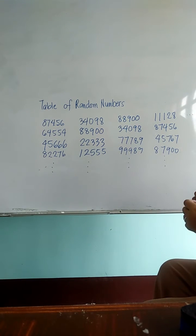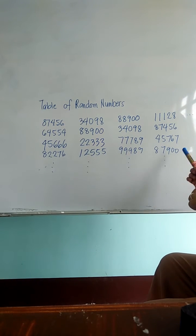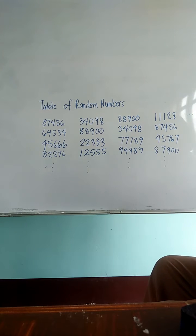If you are going to use the random numbers method, this is what the table of random numbers can look like. So we have a lot of numbers.